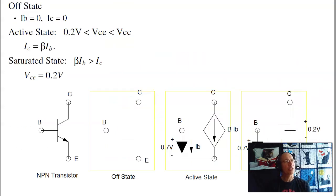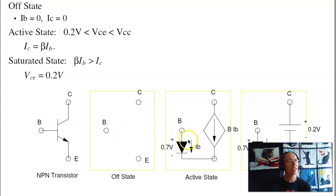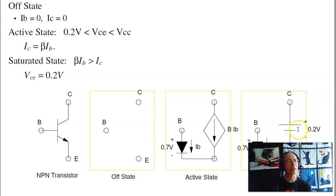A diode has two states — on and off. A transistor has three states. In the off state, there is no current flow, so that model is just an open circuit. In the active state, the collector current is beta times the base current. Base to emitter is a diode; collector to emitter is a current-controlled current source — the current is beta times IB. Whatever the current is through the diode gets amplified by beta. In the saturated state, if I run out of current, the collector-to-emitter voltage tries to go to zero — it can't quite get there, so we assume about 0.2 volts.